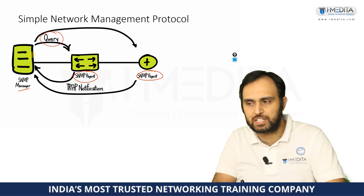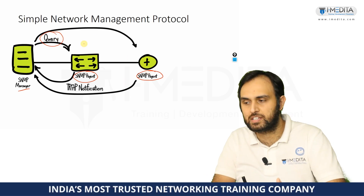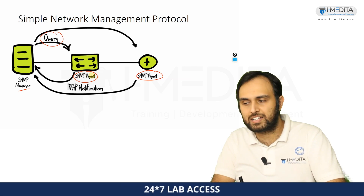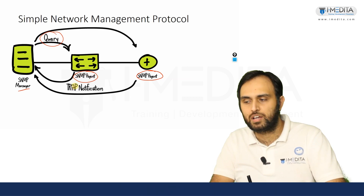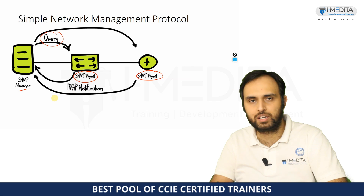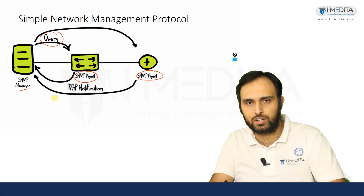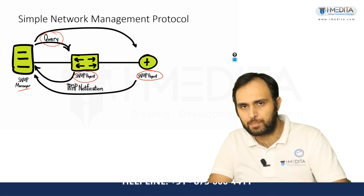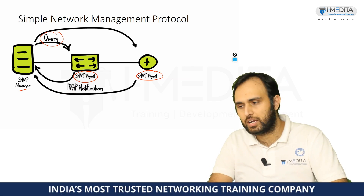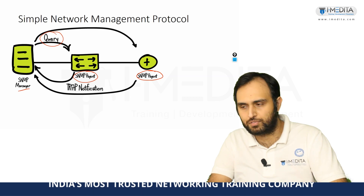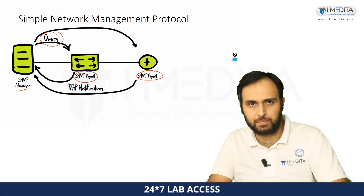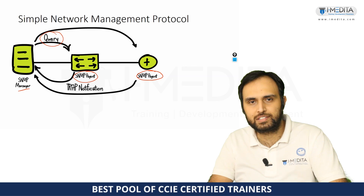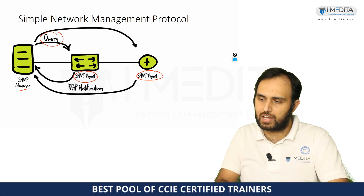The SNMP manager sends queries asking for things from the SNMP agent, and the SNMP agent sends a trap notification based on the requirement — like if something goes up or down — and then sends that trap notification to the SNMP manager.